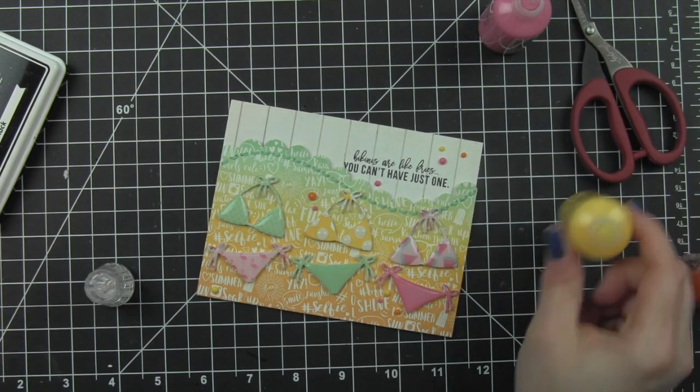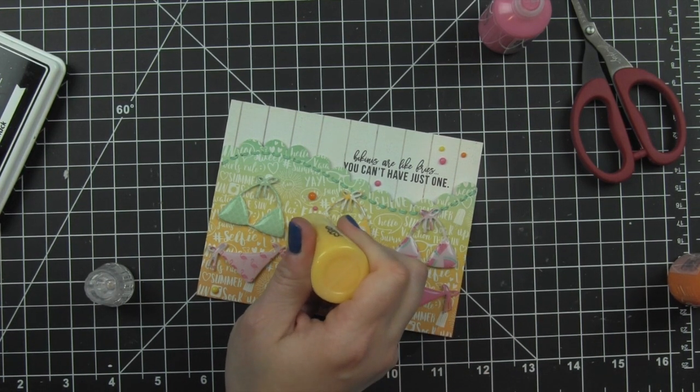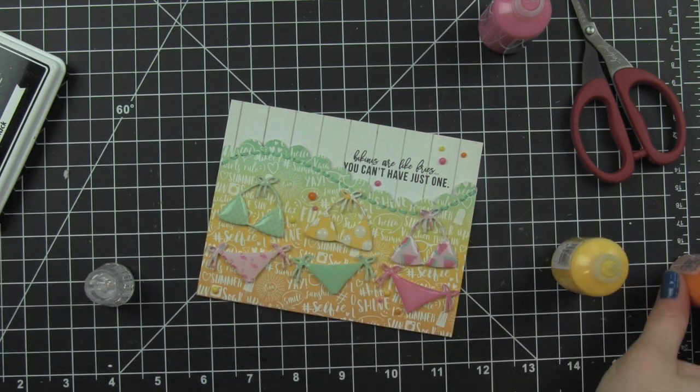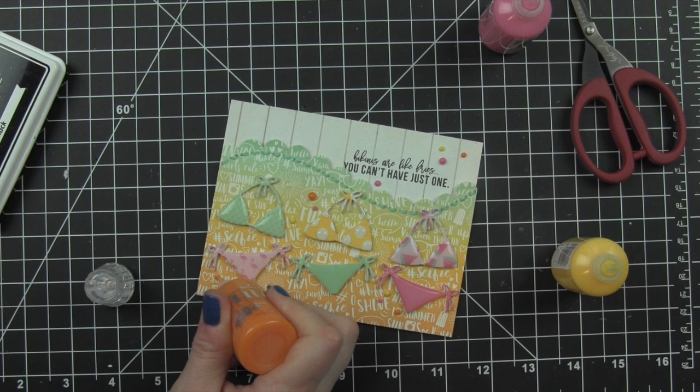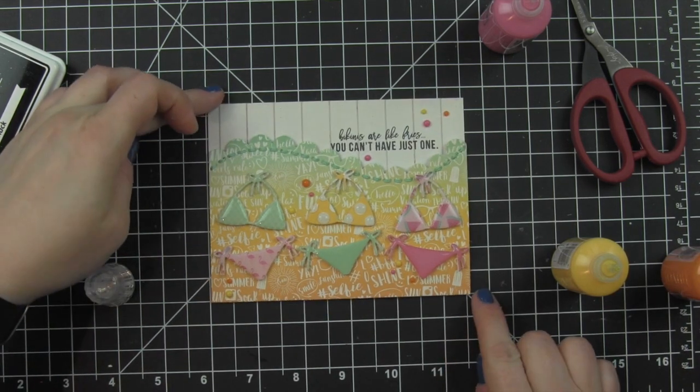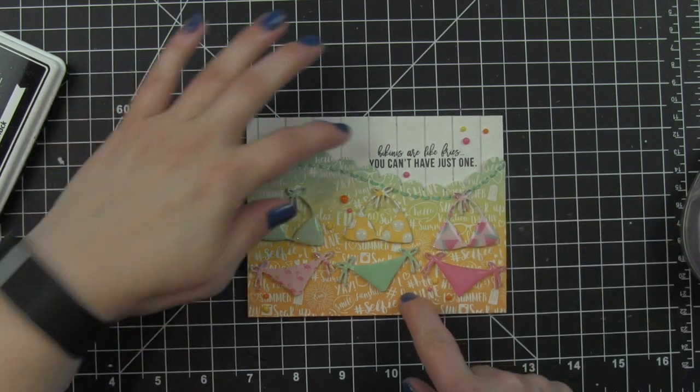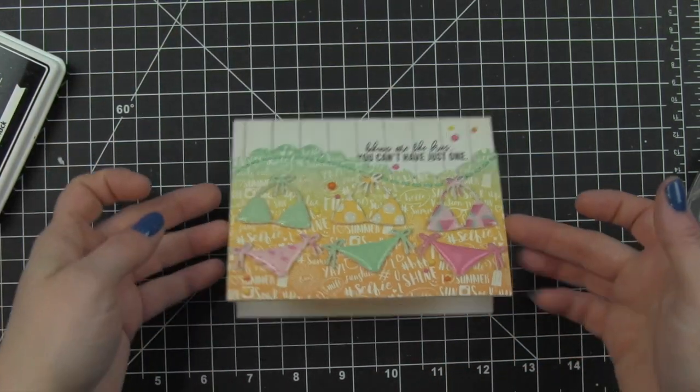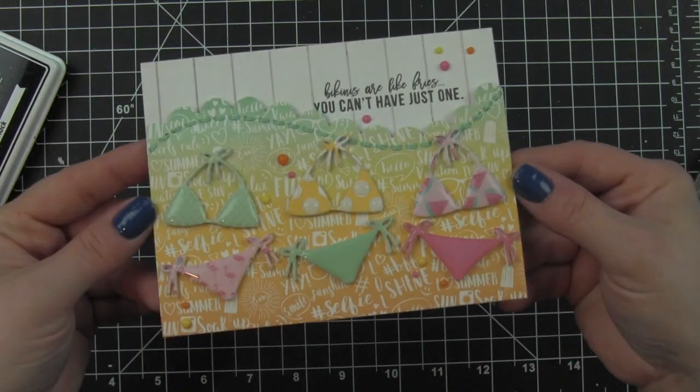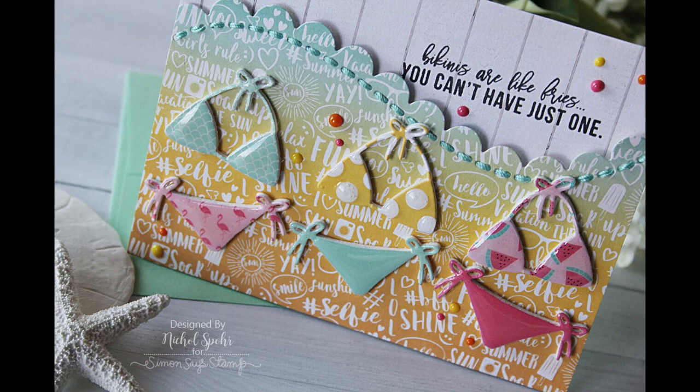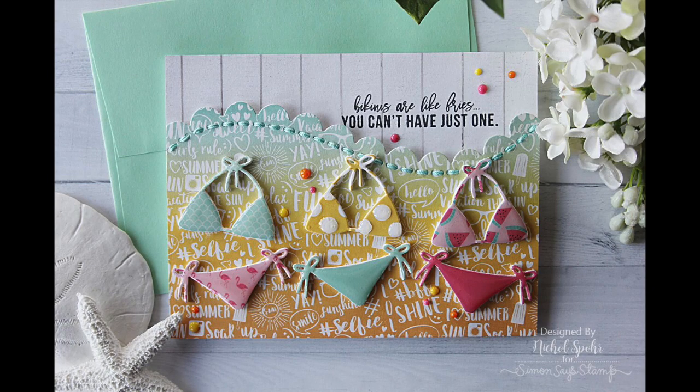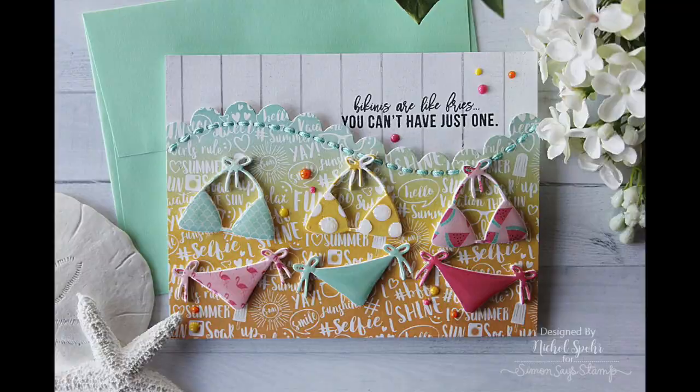Once I have all of my little dots in place, I'm going to go ahead and secure this to a side fold card base. This summer themed card featuring the Simon Says Stamp July card kit, Summer Hello, is what this is called, is going to be all finished. I hope this has inspired you to maybe try out some fun techniques with your dies. Thanks for joining me today and we'll catch you next time.